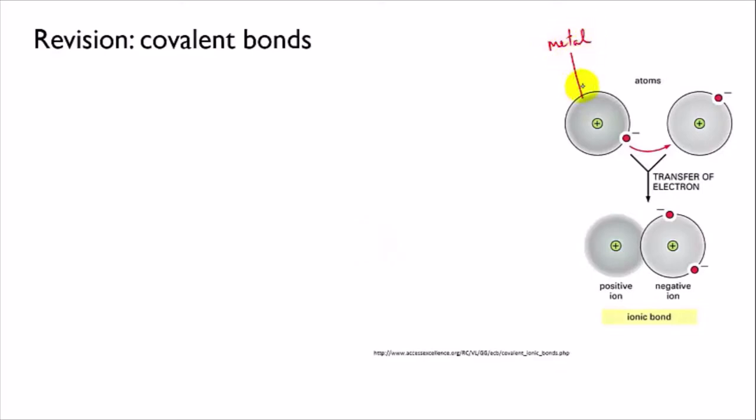The atom of low electronegativity, which will be the metal, will donate one or more of its valence electrons to an atom of high electronegativity, which will be the nonmetal, and the resulting ions attract to form an ionic bond.